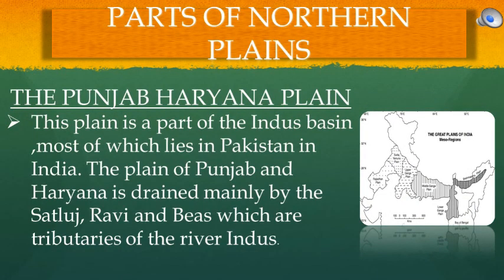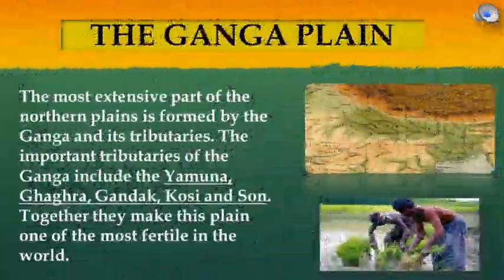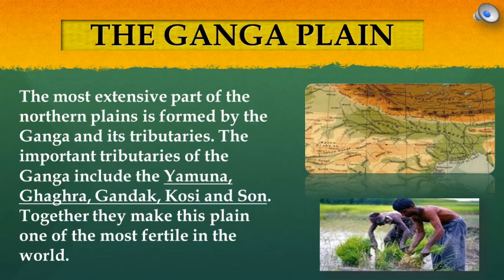The Punjab-Haryana plain is a part of the Indus basin, most of which lies in Pakistan. The plain of Punjab and Haryana is drained mainly by the Satlaj, Ravi and Beas, which are the tributaries of the river Indus. The most extensive part of the Northern Plains is formed by the Ganga and its tributaries. The important tributaries of the Ganga include the Yamuna, Ghagra, Gandak, Kosi and Son. Together they make this plain one of the most fertile in the world.